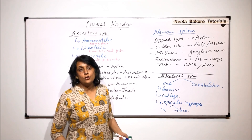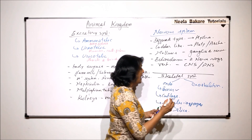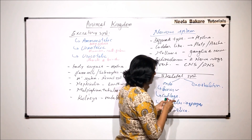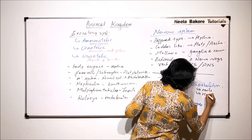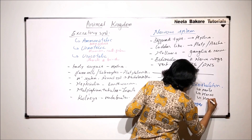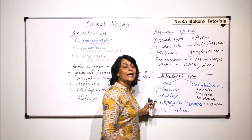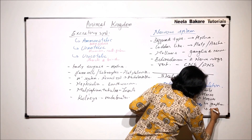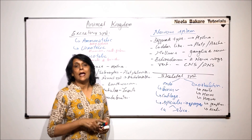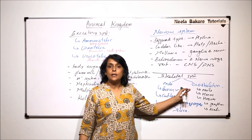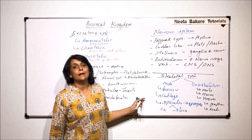Exoskeleton refers to hard structures present outside the body. These include nails, horns, hooves, feathers, and scales. When a structure provides framework and protection from the outside it is called exoskeleton, whereas structures inside the body are endoskeleton. Different types of animals have different types of endo- and exoskeletal structures.